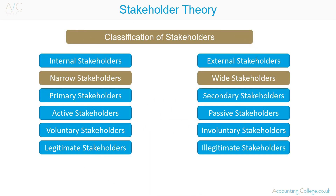Narrow and wide stakeholders. The effects of an organisation's activity on stakeholders can be described as narrow and wide. Narrow being those most affected by the actions of an organisation such as shareholders, employees, customers, suppliers and so forth. Wide being those less affected by the actions of an organisation such as government, wider community and so forth.